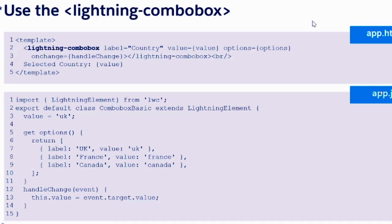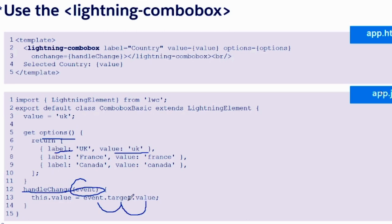Here we are building the options property with a label and a value. We already know the difference between these two. When you click on any option, you are going to call handleChange and pass the event. So event.target.value — what do you think will be returned if you call event.target? What is the value for event.target?